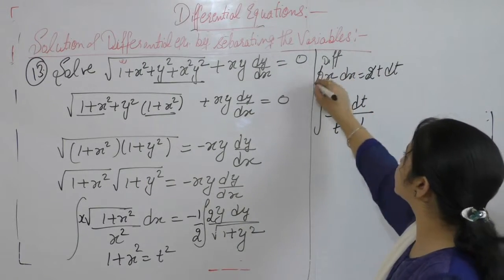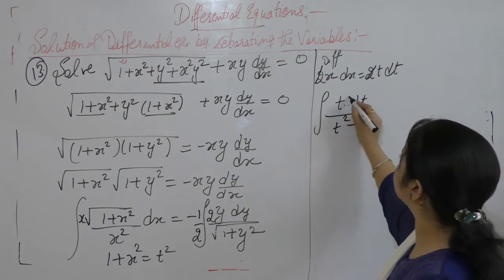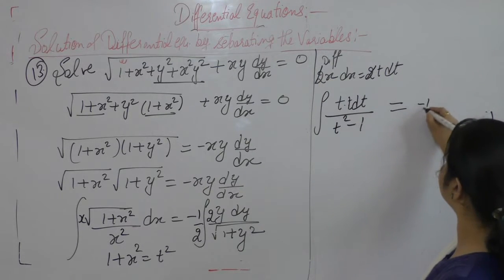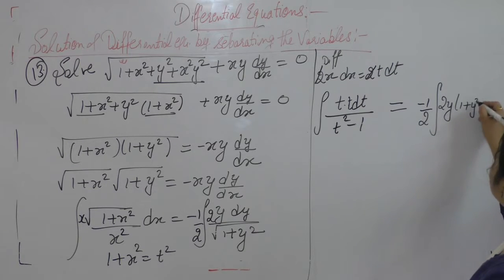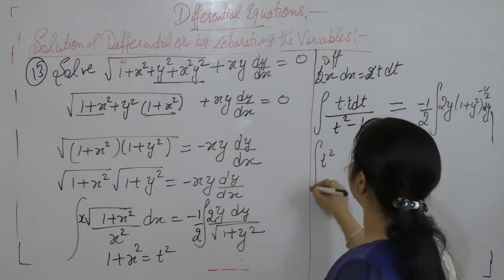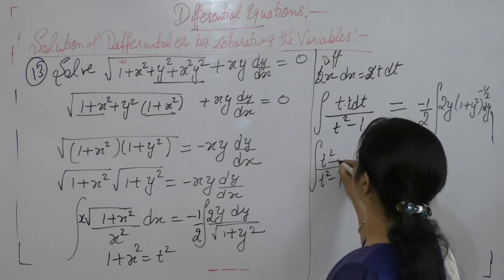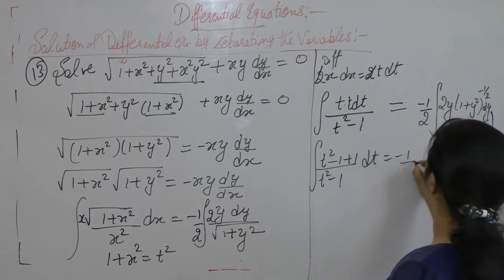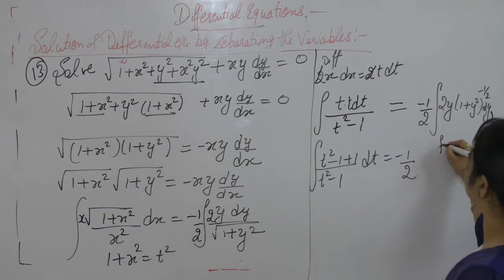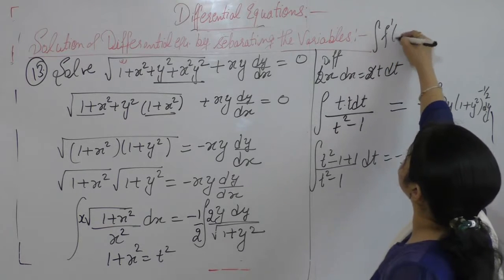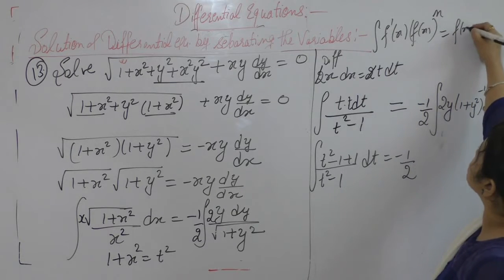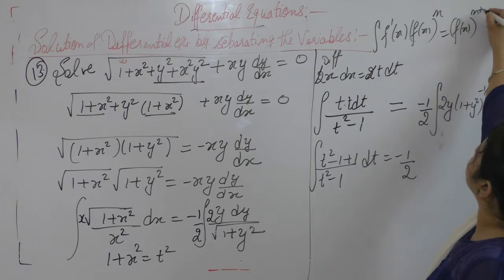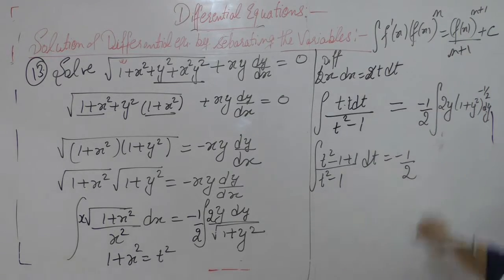2t dt — the 2 will be cancelled, so x dx is t dt. Here we get minus 1 by 2, we can write it as 2π(1 + y²)^(−1/2), t² upon t² minus 1. Adding and subtracting 1 here, so here it is a form: integral of f′(x) · [f(x)]^n, that is equal to [f(x)]^(n+1) upon (n+1) plus c.